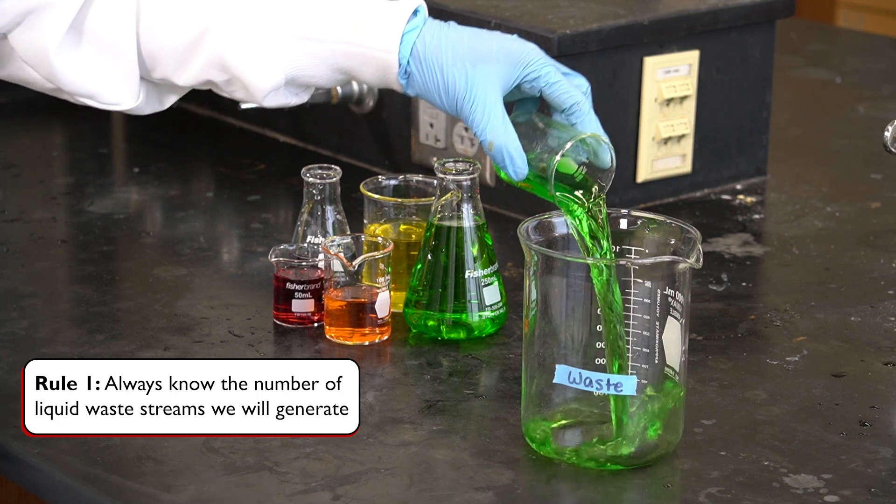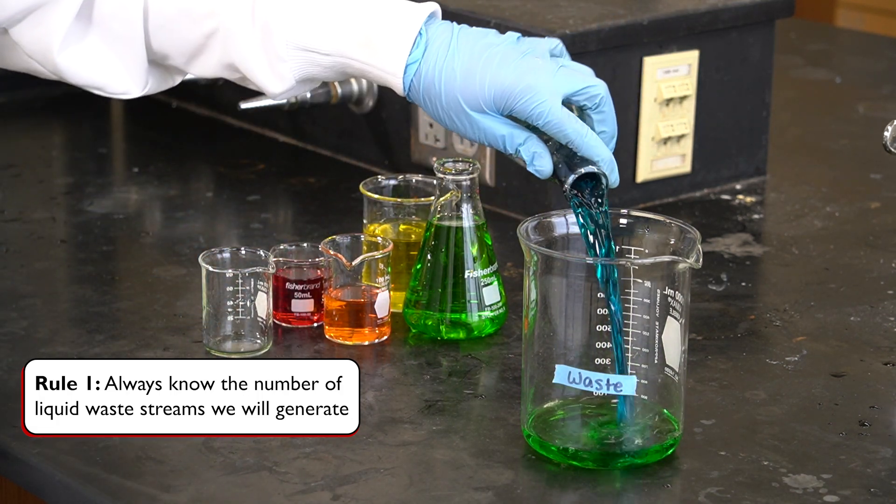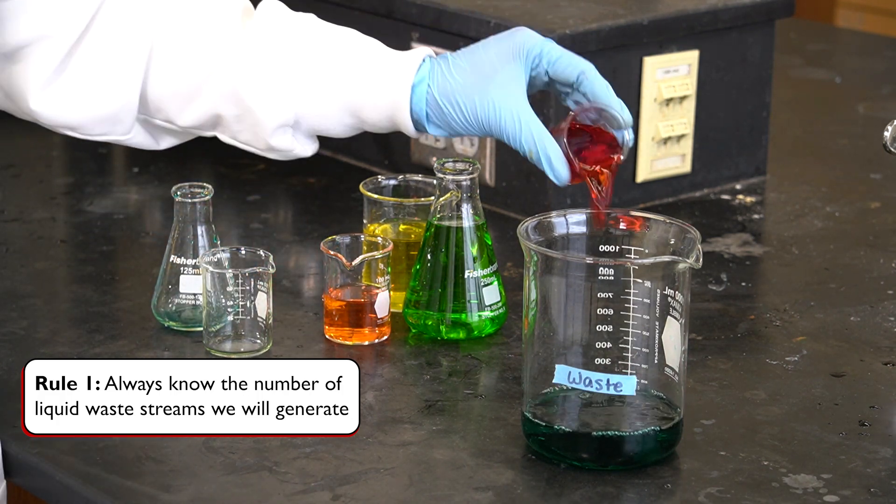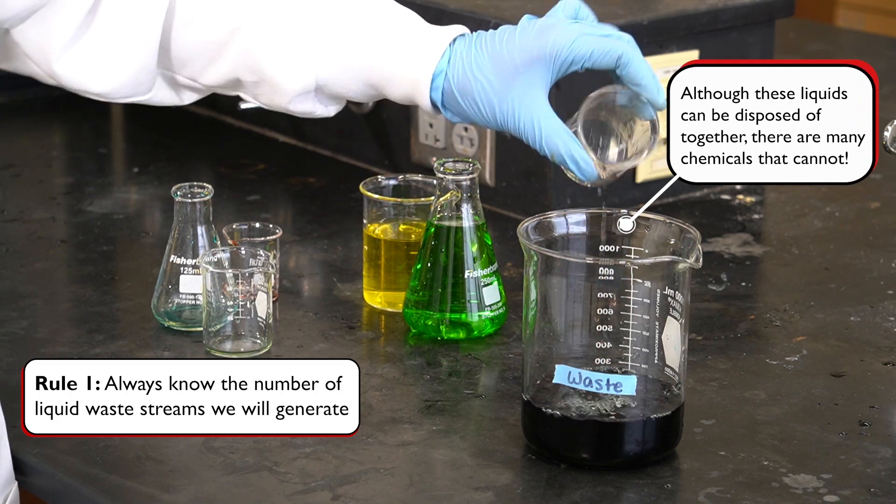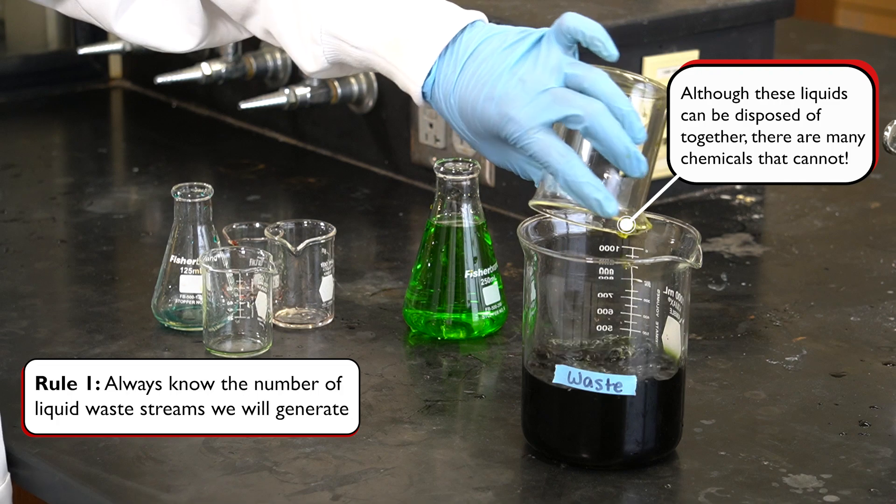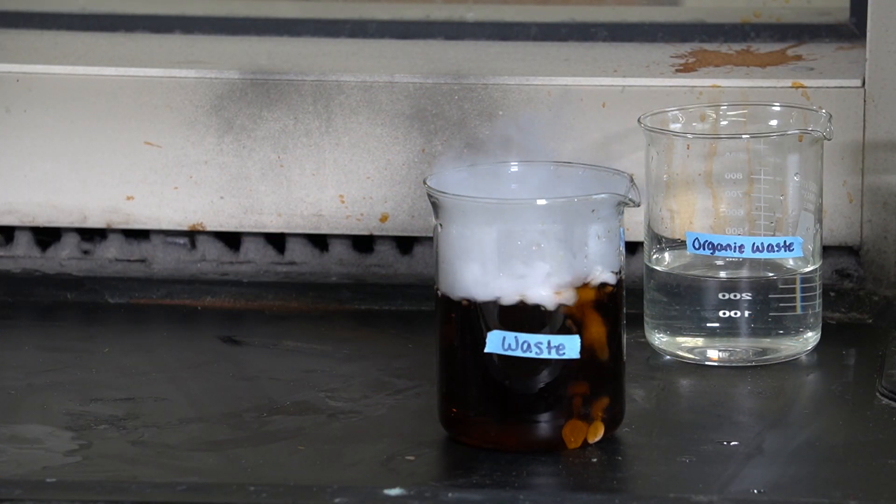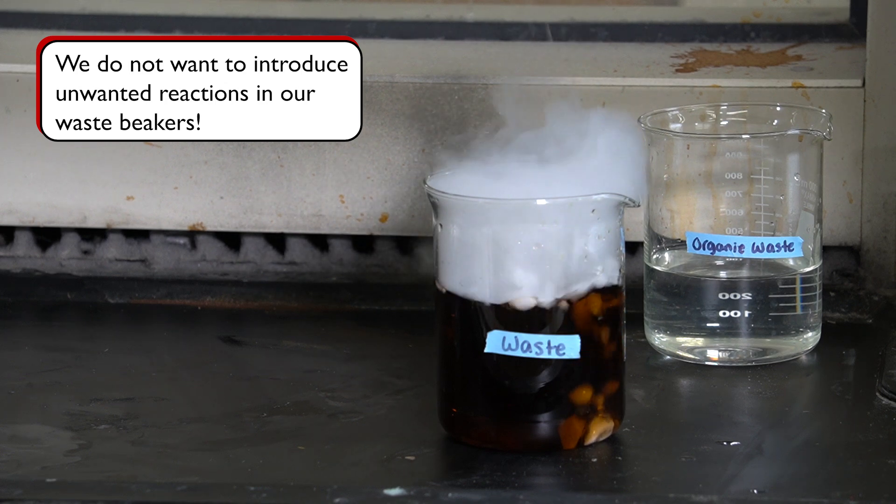Rule number one: always know the number of liquid waste streams we will generate. In other words, the number of different types of liquids that will need to be collected. While some liquids can be disposed of together, there are some types of liquid waste that are incompatible and should never be mixed. Mixing inappropriate liquid waste together can cause unwanted and potentially dangerous chemical reactions. If you're not careful, a waste jar can easily turn into a bomb. That must never happen.